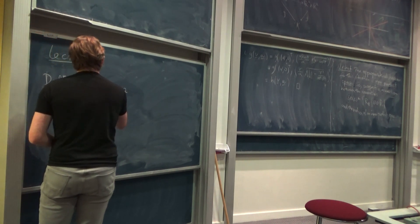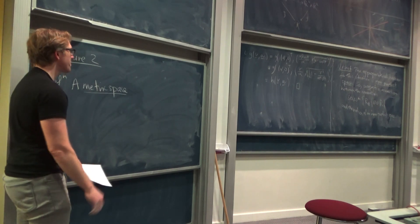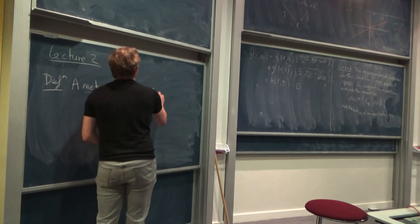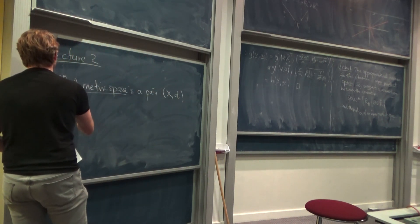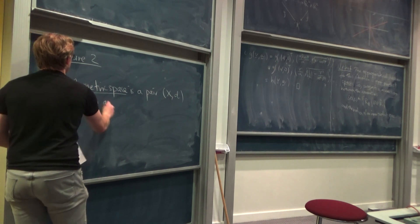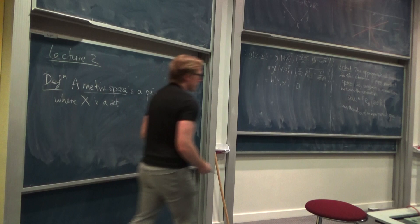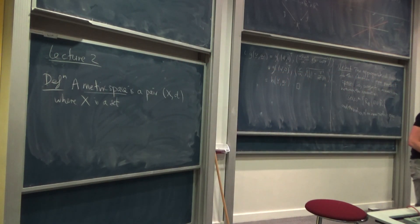Definition. So remember, metric space was the abstraction which captured the notion of Euclidean distance. A metric space is a pair consisting of a set and some function and then some axioms.